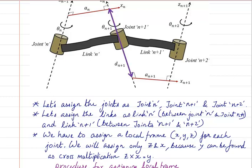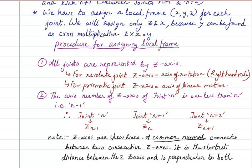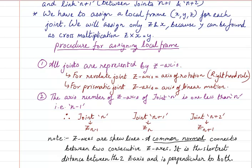The procedure for assigning is that all joints are represented by a z-axis. There are two kinds of joint: a revolute joint and a prismatic joint. For a revolute joint, we take the axis of rotation as the z-axis, using the right-hand rule to get the correct direction. For a prismatic joint, we choose the z-axis as the direction in which the linear motion occurs — the direction in which the prismatic joint creates movement.